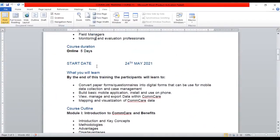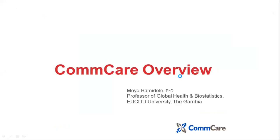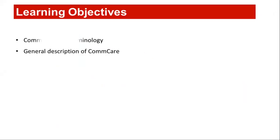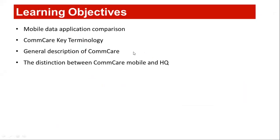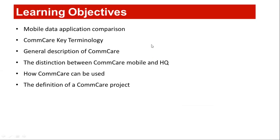I believe everybody is clear on the expectations for this course. Moving to the CommCare overview for Module 1, the learning objectives include: mobile data application comparison, CommCare key terminologies, a general description of CommCare, the distinction between CommCare Mobile and CommCare HQ, how CommCare can be used, the definition of CommCare projects, and web and mobile users.